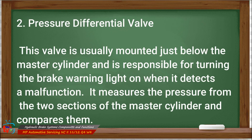Number two: pressure differential valve. This valve is usually mounted just below the master cylinder and is responsible for turning the brake warning light on when it detects a malfunction. It measures the pressure from the two sections of the master cylinder and compares them. Since it is mounted ahead of the proportioning or equalizer valve, the two pressures it detects should be equal. If it detects a difference, it means that there is probably a brake fluid leak somewhere in the system.